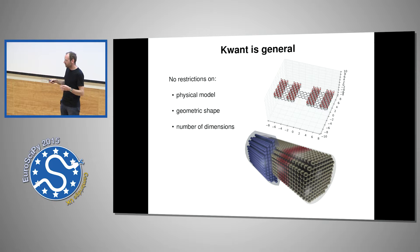Kwant is fully general in terms of the models. You can build graphs in any dimensionality of any shape. There are no restrictions with regard to number of dimensions. It sounds kind of obvious, but for various reasons the packages which were available before had various restrictions like you could only have 2D systems which were quasi one-dimensional. This is related to the numerical methods which were used to solve them.